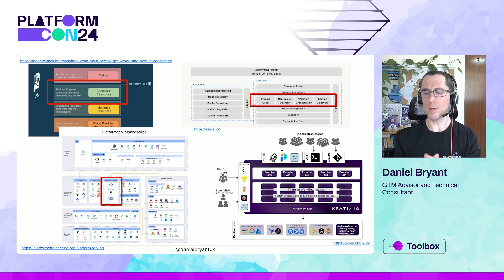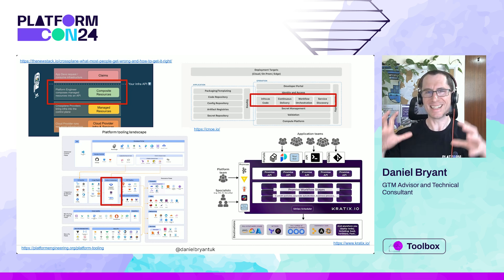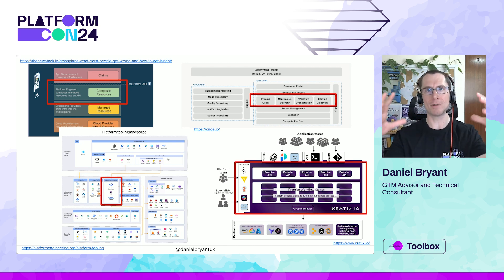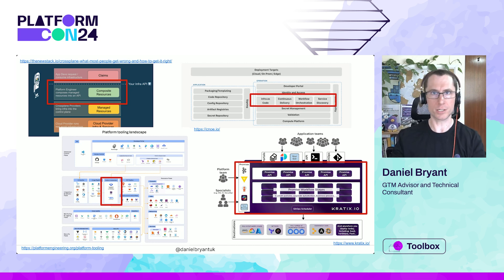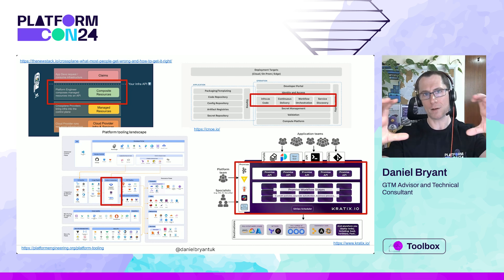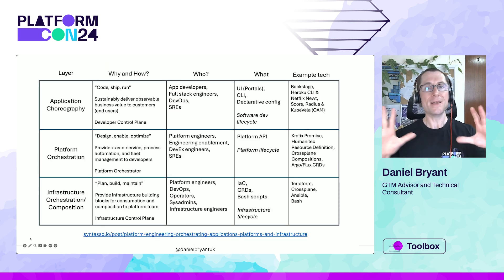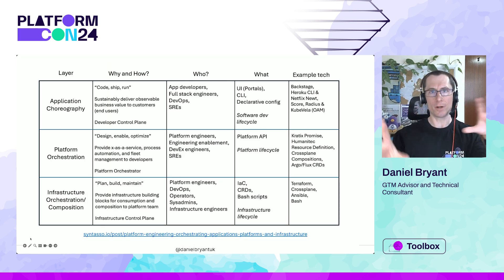Last but not least, there's Kratix — the project I'm currently working with — which is explicitly a platform orchestration tool. It has a Promise API that encapsulates platform components, and this whole thing is built around that missing middle. It works really nicely with Backstage, calls out to infrastructure like Crossplane and Terraform, but that workflow and orchestration layer is explicitly called out — and it's really, really valuable.